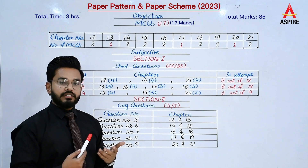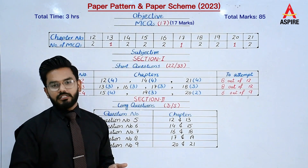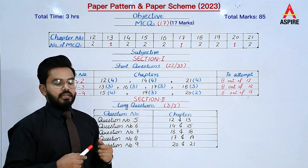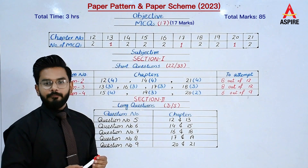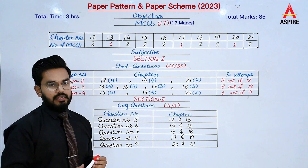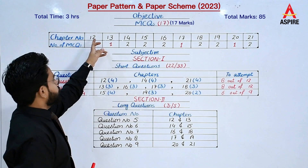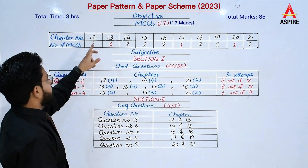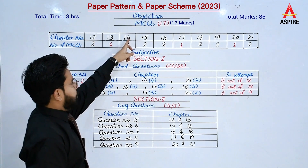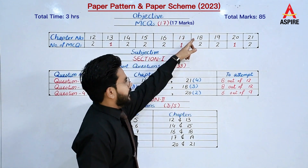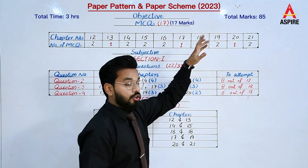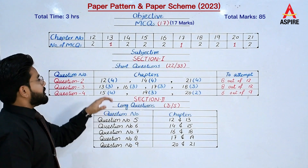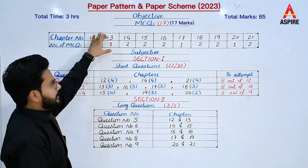These 17 MCQs can be distributed across the chapters. We have a total of 10 chapters. The chapters covered are chapter number 12, 14, 15, 16, 18, 19, and 21, making a total of 17 MCQs.